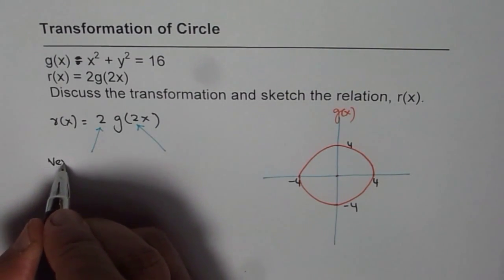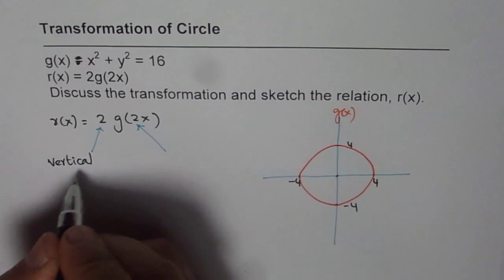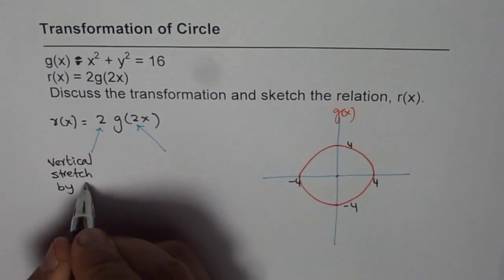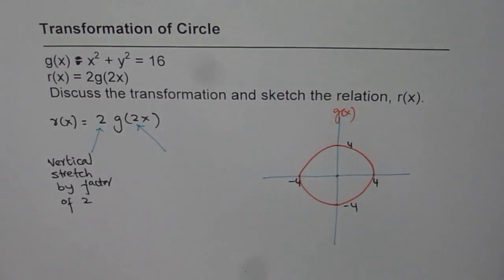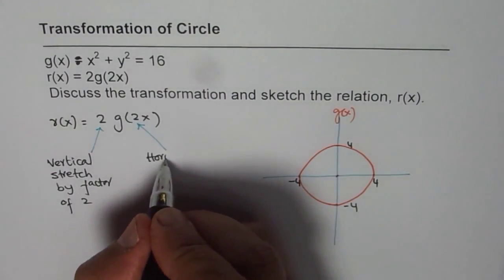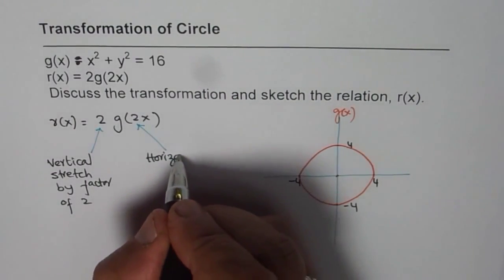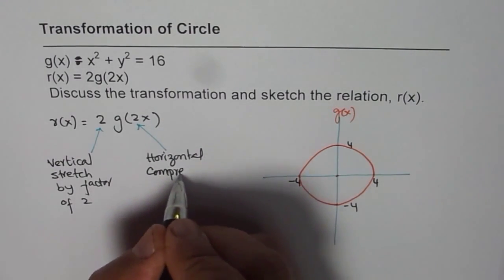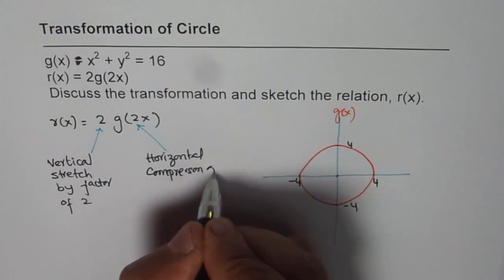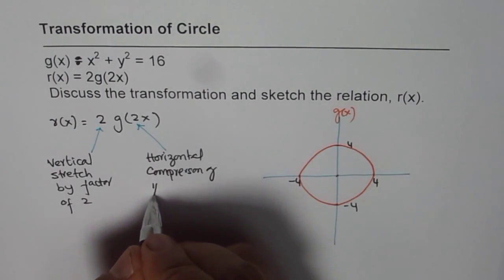It means vertical stretch by factor of 2. The other 2 which is inside the brackets represents horizontal what? Stretch or compression? Compression of half.